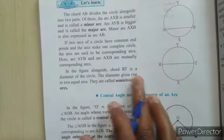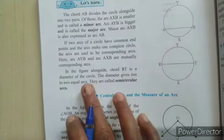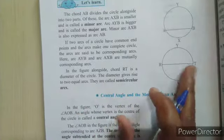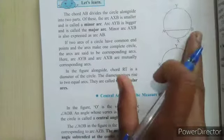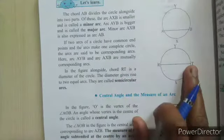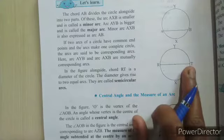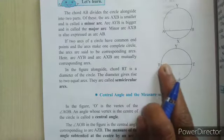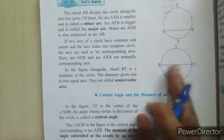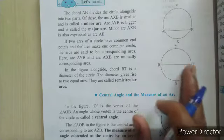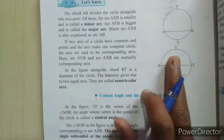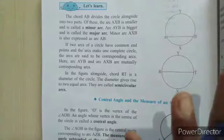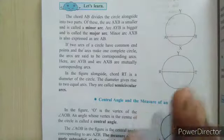In the figure alongside, chord RT is the diameter of the circle. RT is the diameter and AB is the chord. The diameter passes through the center of the circle and it divides the circle into two equal parts.